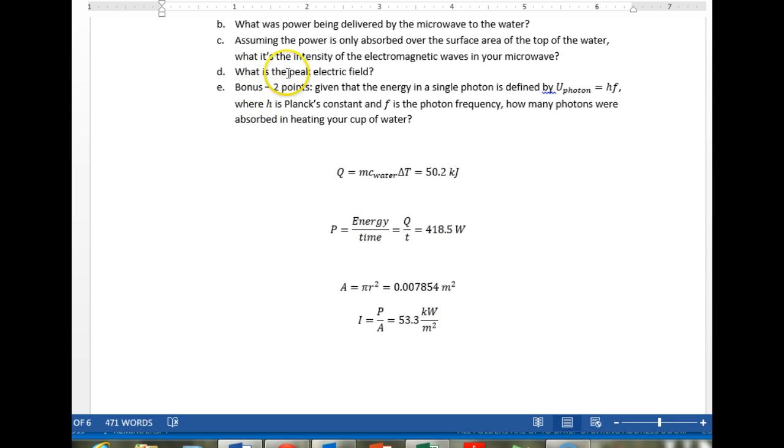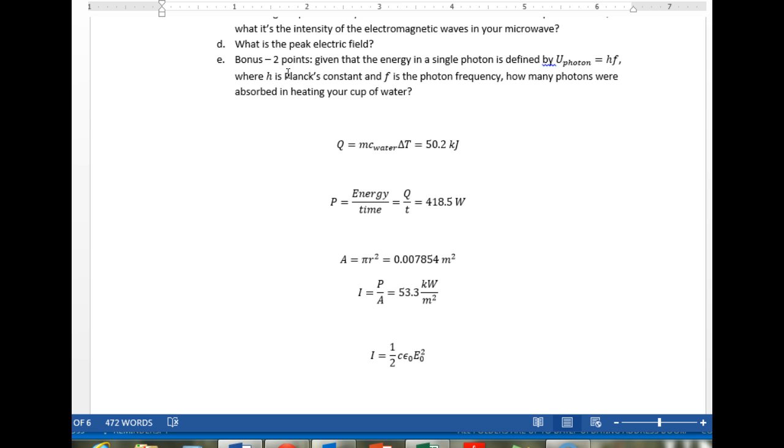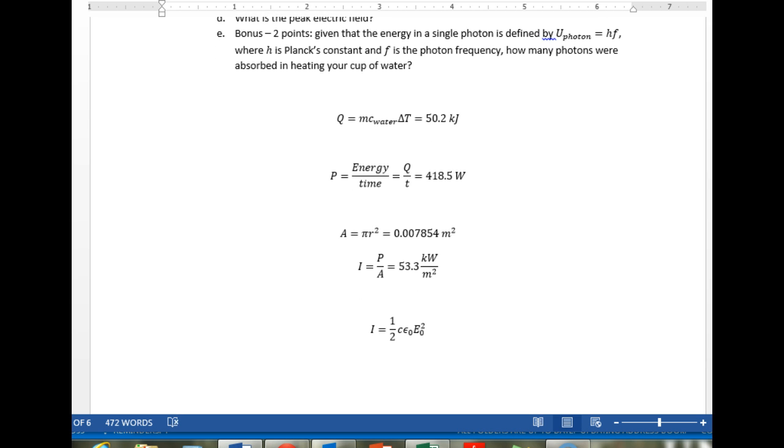What is the peak electric field? For this, we turn to I equals 1/2 of C epsilon naught E naught squared. So the intensity is 1/2 of the speed of light times the permittivity of free space times the electric field, our peak electric field squared. So if we solve this for peak electric field,